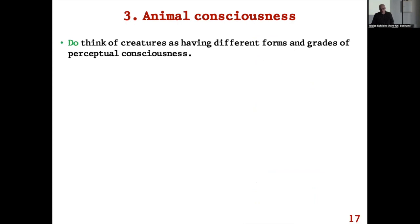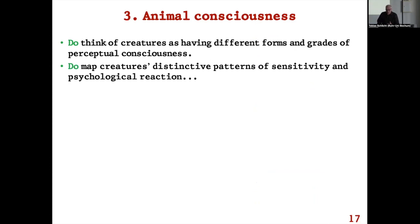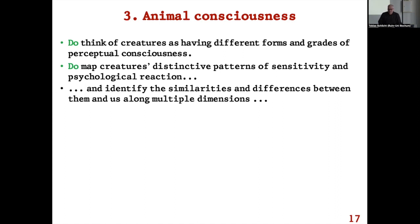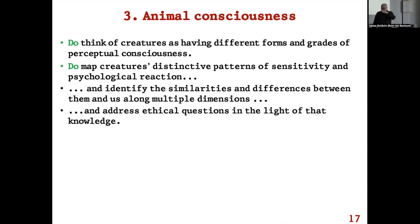Do think of creatures as having different forms and grades of perceptual consciousness — different kinds of informational and reactive loops, loops upon loops interacting and looping back on each other. Do map creatures' distinctive patterns of sensitivity and psychological reaction. Instead of just doing a bit of reflection on your intuitions about consciousness, identify the similarities and differences between them and us along multiple dimensions, to get a picture of how the shape of their perceptual consciousness differs from ours.